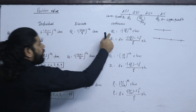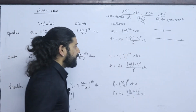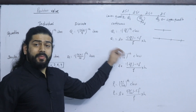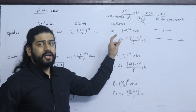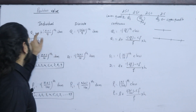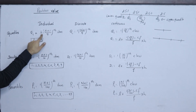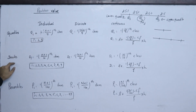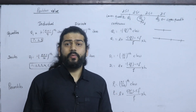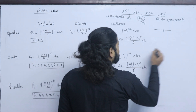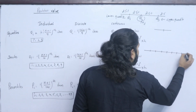For discrete data, the formula is Q_i = i(n+1)/4. For continuous data: Q_i = L + (i·n/4 − CF) / F × H. The median divides data by 2, and the quartile divides by 4, so n/4. If median equals (n+1)/2, then Q1 uses i=1 and Q3 uses i=3.